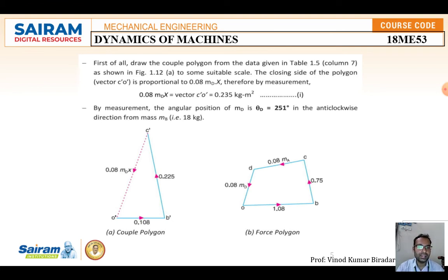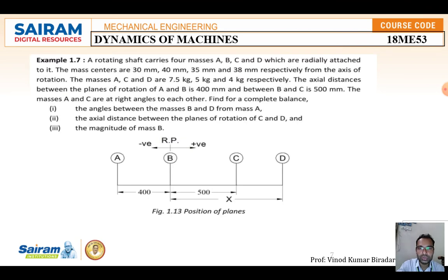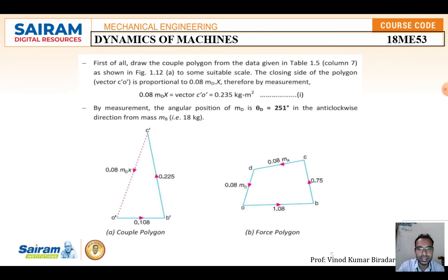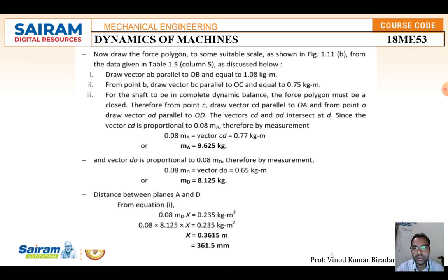By reading alone it is not possible to understand — you must practice. Take a scale, pencil, graph sheet, and geometry box and construct the diagram. If you have any doubts constructing the force polygon, you can call me. Once you solve: 0.08 × M_A = vector C to D, giving mass A = 9.62 kg. And 0.08 × M_D = vector D to O, giving mass D = 8.125 kg.